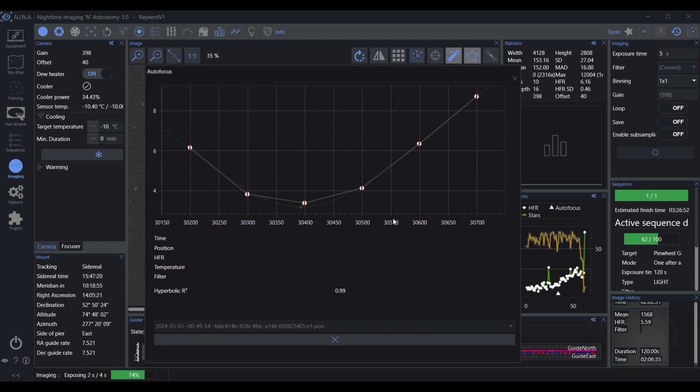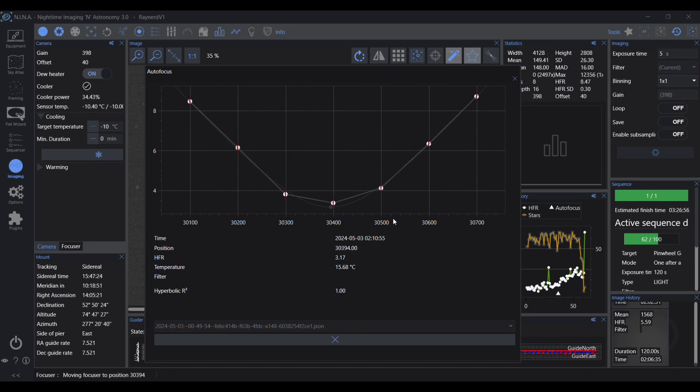From this point, then it will draw a curve and it will take the focuser to the position that it thinks will be optimum. And it is worth noting that you do have to play around with the exposure time as well to ensure that that is getting a good HFR for the stars.